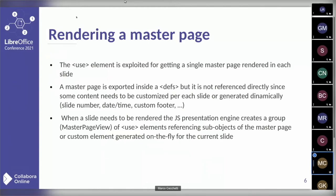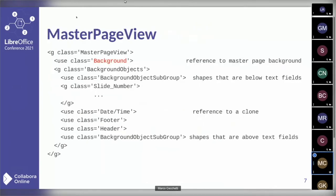The master page is not referenced directly by the use element because a master page has some content that is customized by each slide, or even generated dynamically, such as a slide number, date, time, or a slide that owns a custom footer. When a slide needs to be rendered, the JavaScript presentation engine creates a group of use elements referencing sub-objects of the master page instead of the whole master page. In order to create this group of sub-object references, there is a specific class named the master page view.